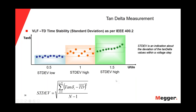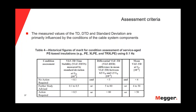Once we have evaluated these three criteria, we can use the tables in IEEE 400.2 to compare our results and see what the condition assessment of our cable is. We can have different condition assessments depending on the values of the VLF time stability, the delta of the tan delta, and the mean value of the tan delta. The possible assessments are: no action required, further study advised, and action required.